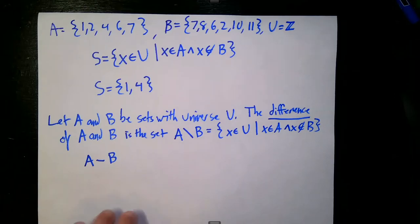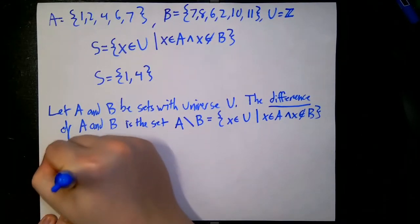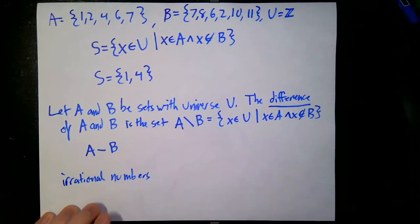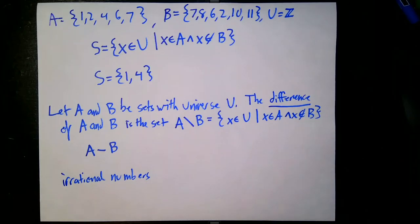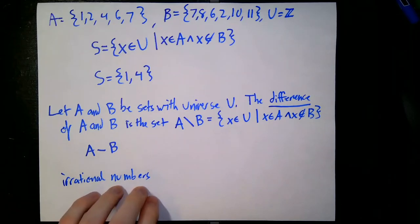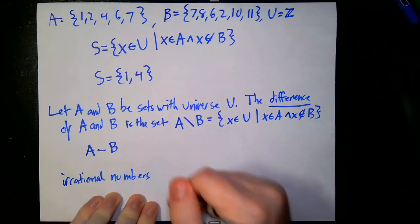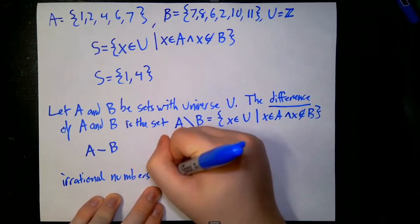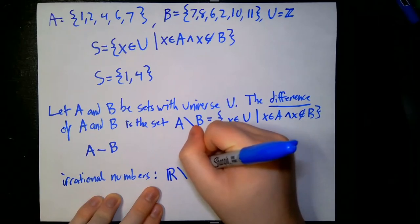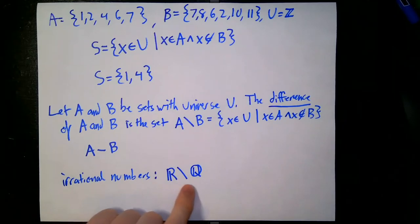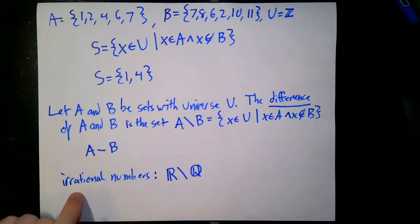A really cool example is the set of irrational numbers. Irrational numbers don't have a special set symbol like the reals or rationals, but we can use set operators to describe them. The irrational numbers are all real numbers that are not rational — so we take the set of real numbers, remove all the rational ones, and we're left with all the irrational numbers: ℝ \ ℚ.